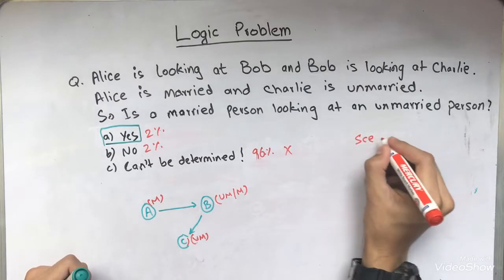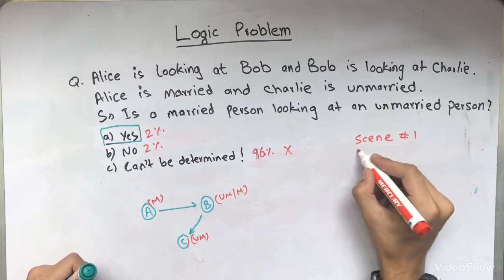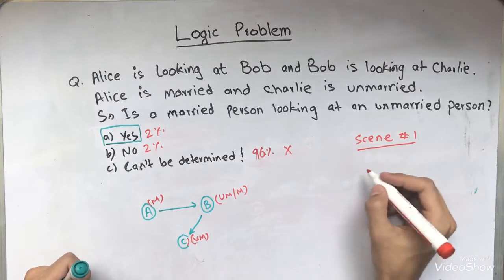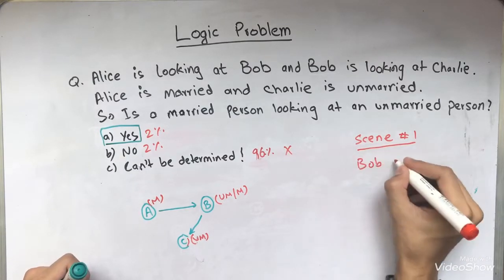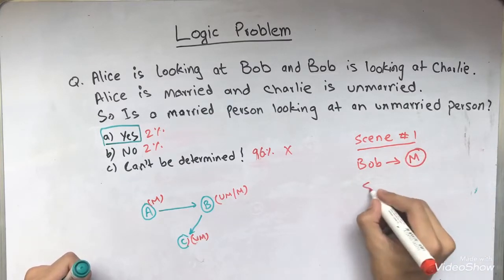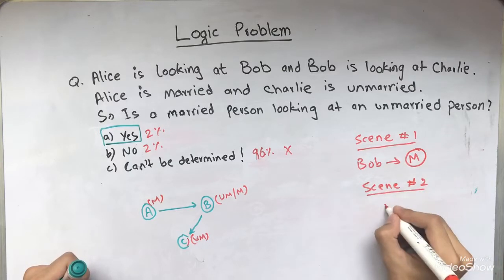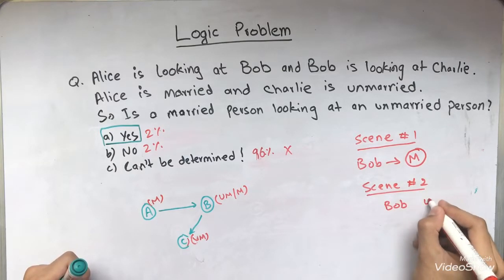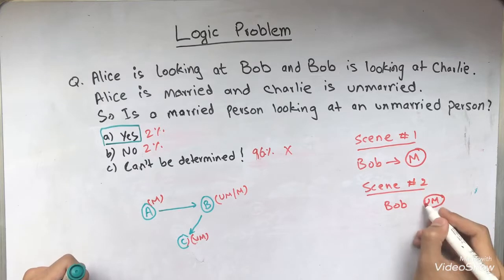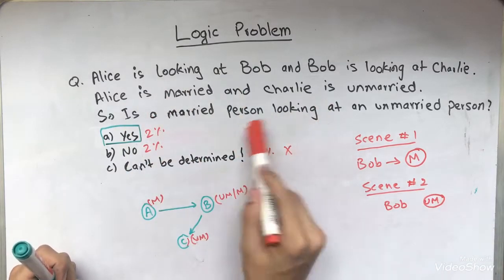So first of all, I'm going to write scene one. Scene one. I hope I wrote the spelling right. I'm bad with it. Anyway, scene one. I'm going to consider Bob married. And in scene two, I'm going to consider Bob unmarried and then find out whether the overall statement is verified or not.